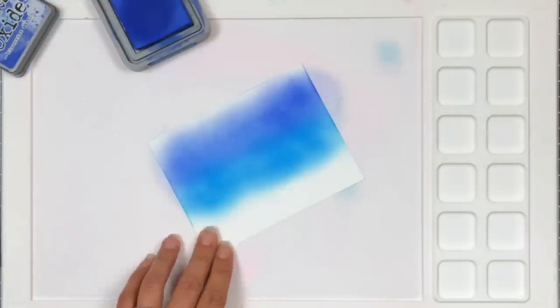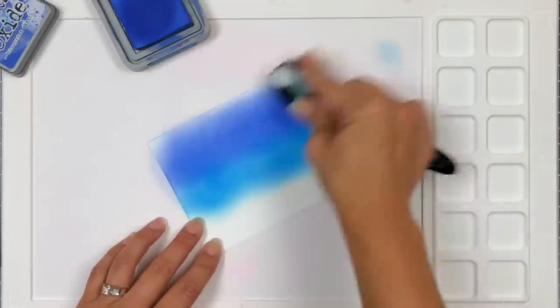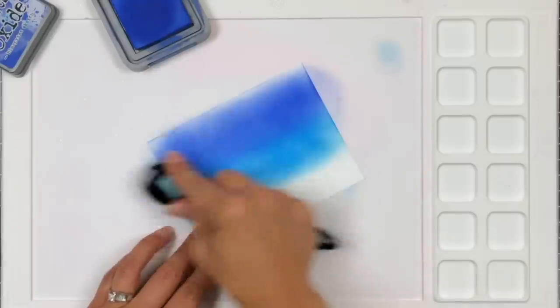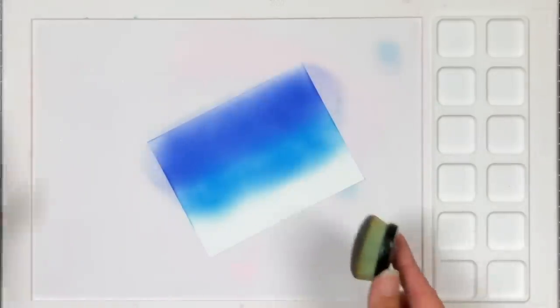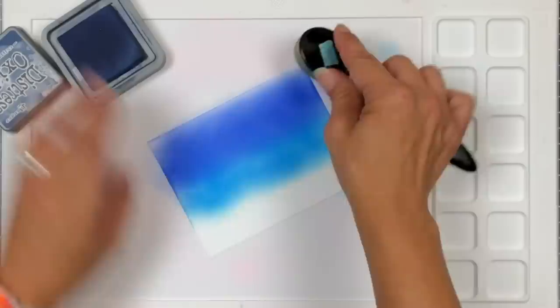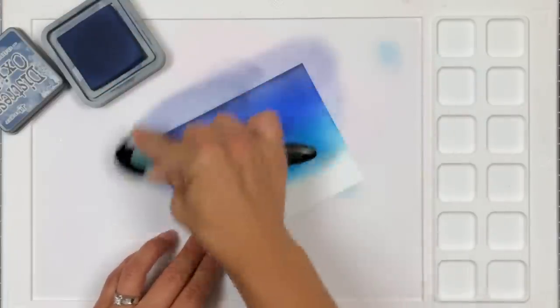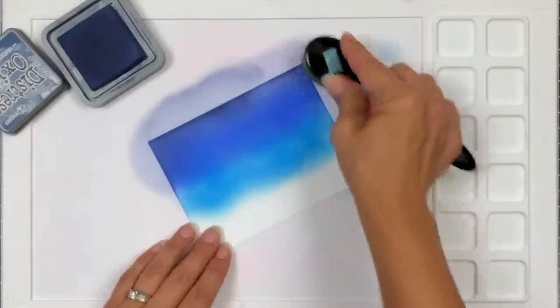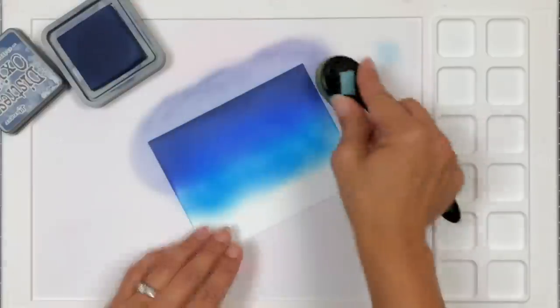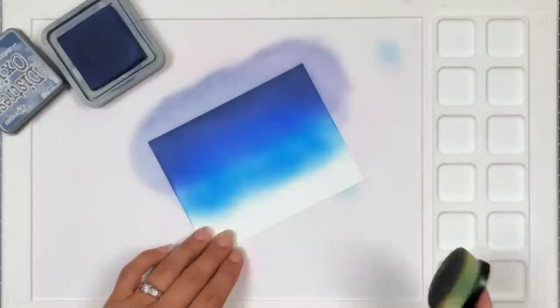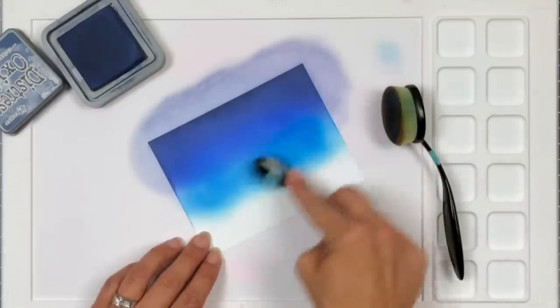You do have to go over it a couple times to really get it to blend so if you feel you're not getting a good blend right away just keep working those colors. I do go back and forth between my colors to help make that a smooth transition. Next is going to be the chipped sapphire and this really packs the punch to the background where it adds that dark edge all the way around.